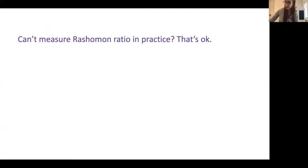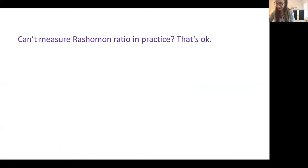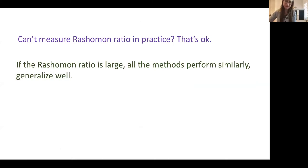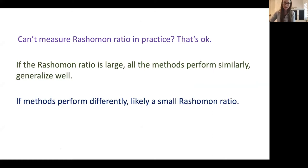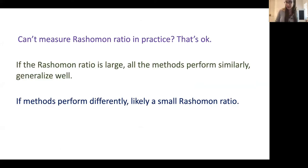Even though you can't actually measure the Rashomon ratio in practice, we get a lot of information from these experiments. If the Rashomon ratio is large, all methods tend to perform similarly and generalize well. If the methods perform differently, it's likely to have a small Rashomon ratio. We're not completely sure about all this, but it's a viable possible explanation for what's actually going on in practice.